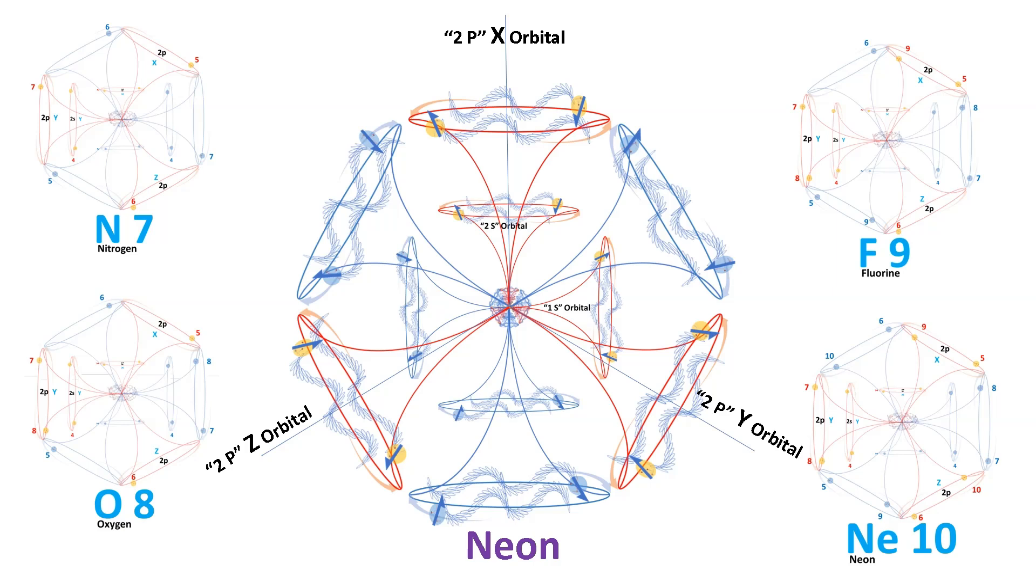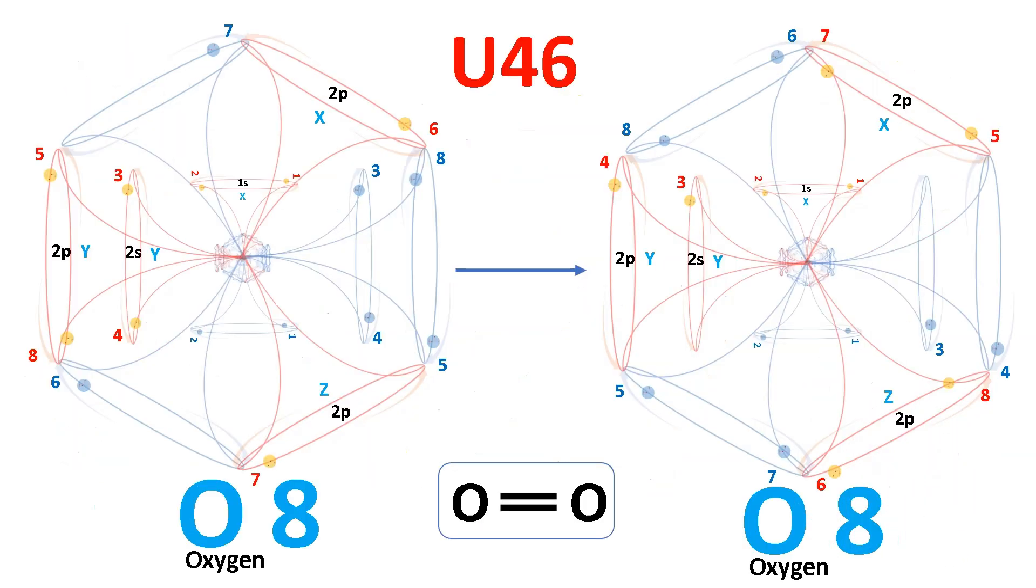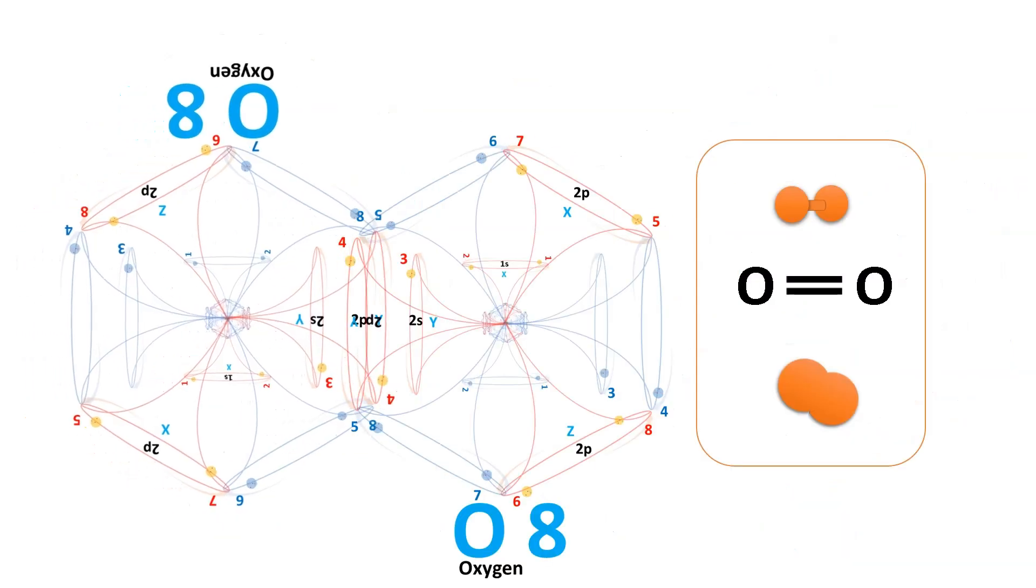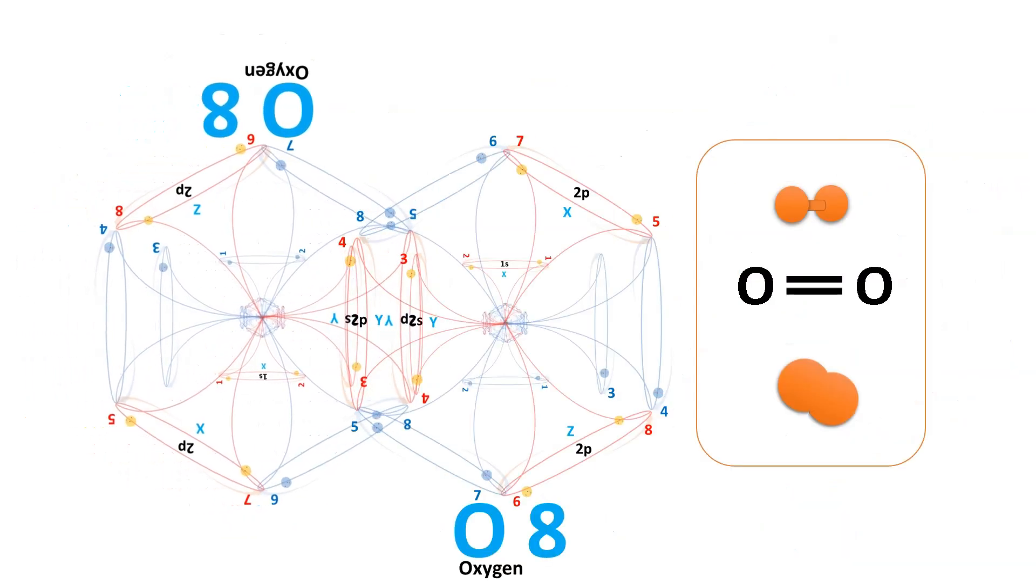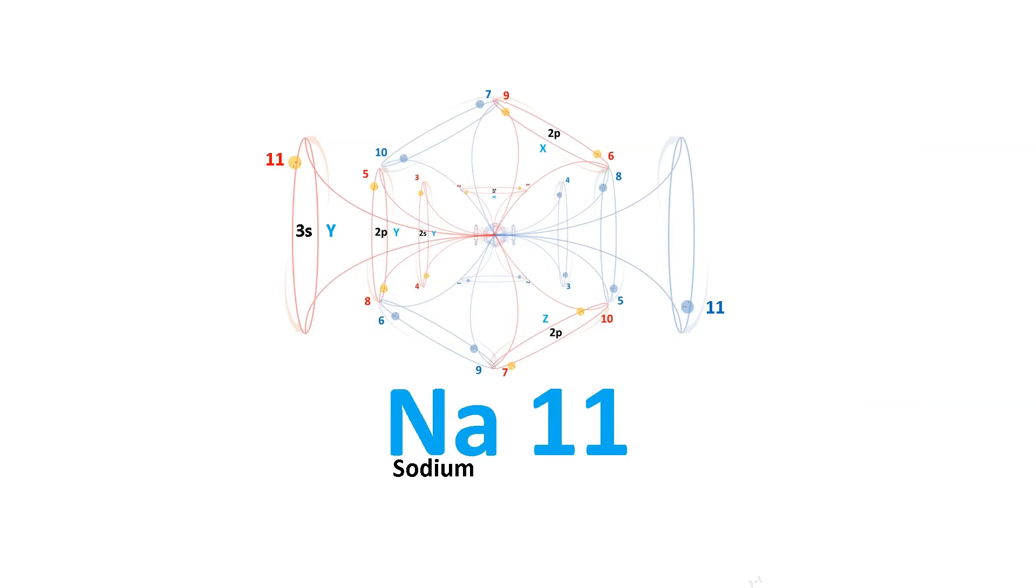Consequently, atoms achieve their electron capacity and are unable to accommodate additional electrons. This distinct property sets elements within this group apart as individual entities, contrasting with oxygen molecules where two oxygen atoms bond. Continuing down the periodic table, sodium, with its 11 electrons, emerges as the next element.